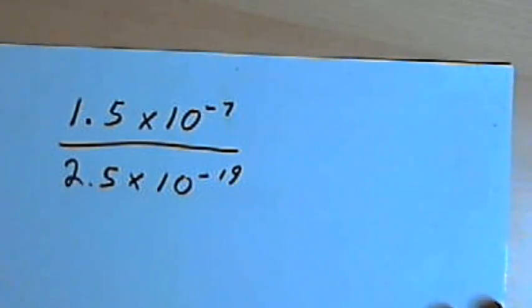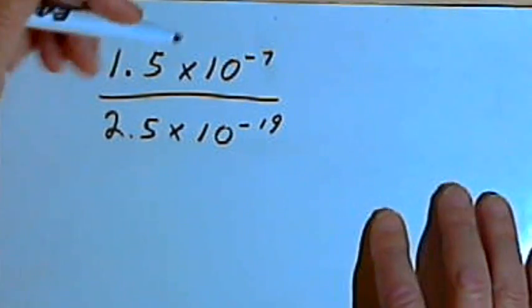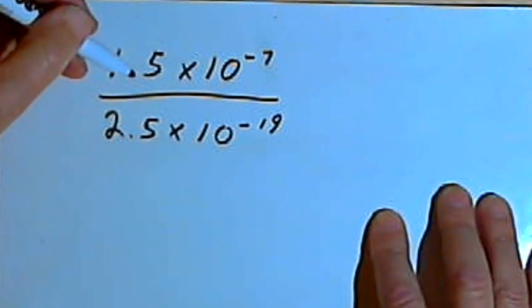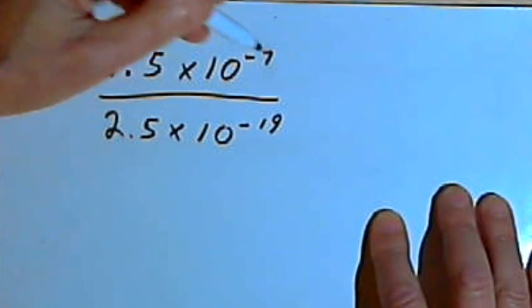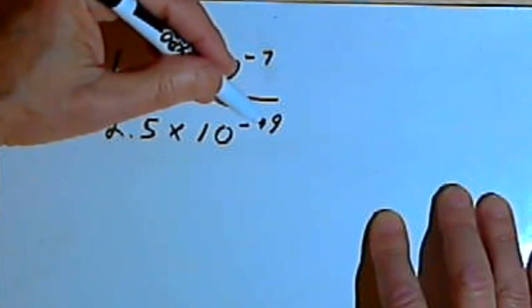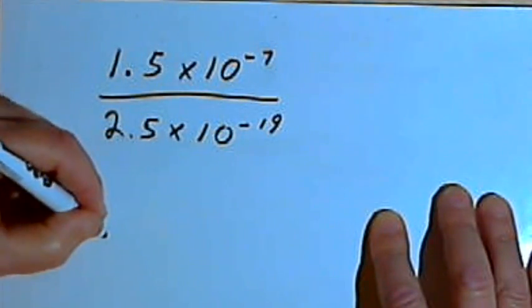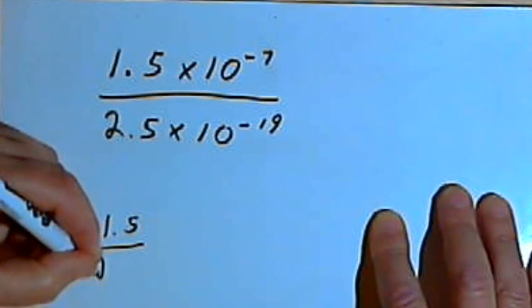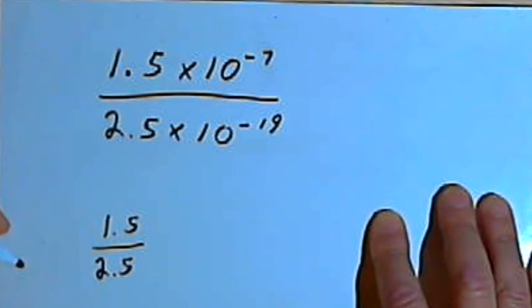So here's another problem, just a little bit more difficult, but not really very hard. I've got 1.5 times 10 to the negative 7th, and that's divided by 2.5 times 10 to the negative 19th. So let's deal with that 1.5 over 2.5 first.